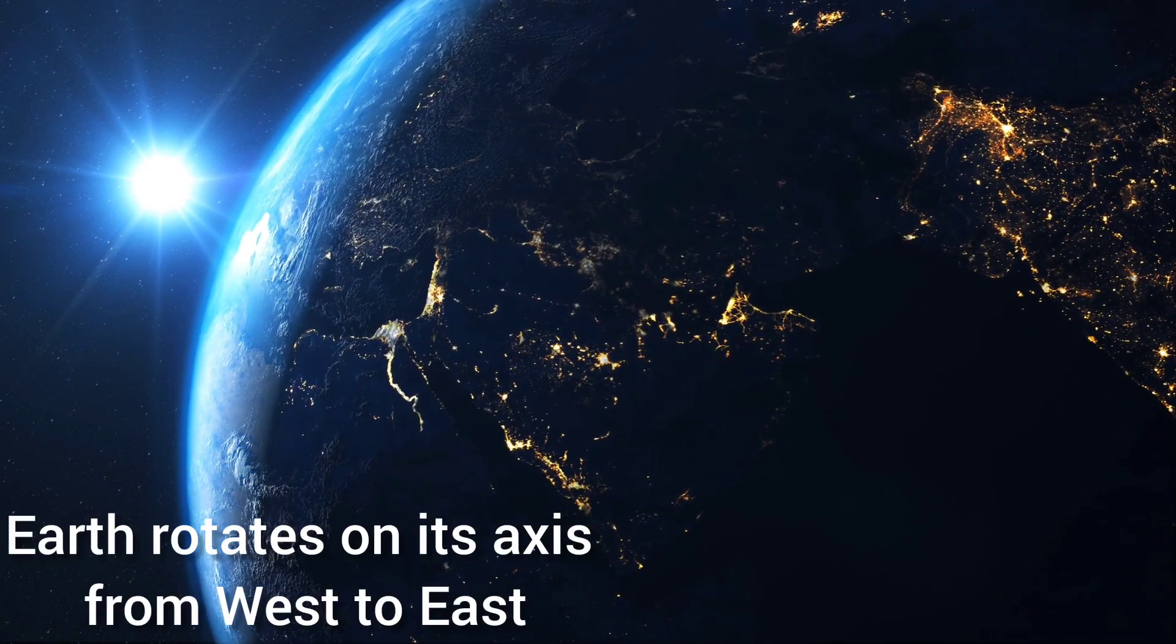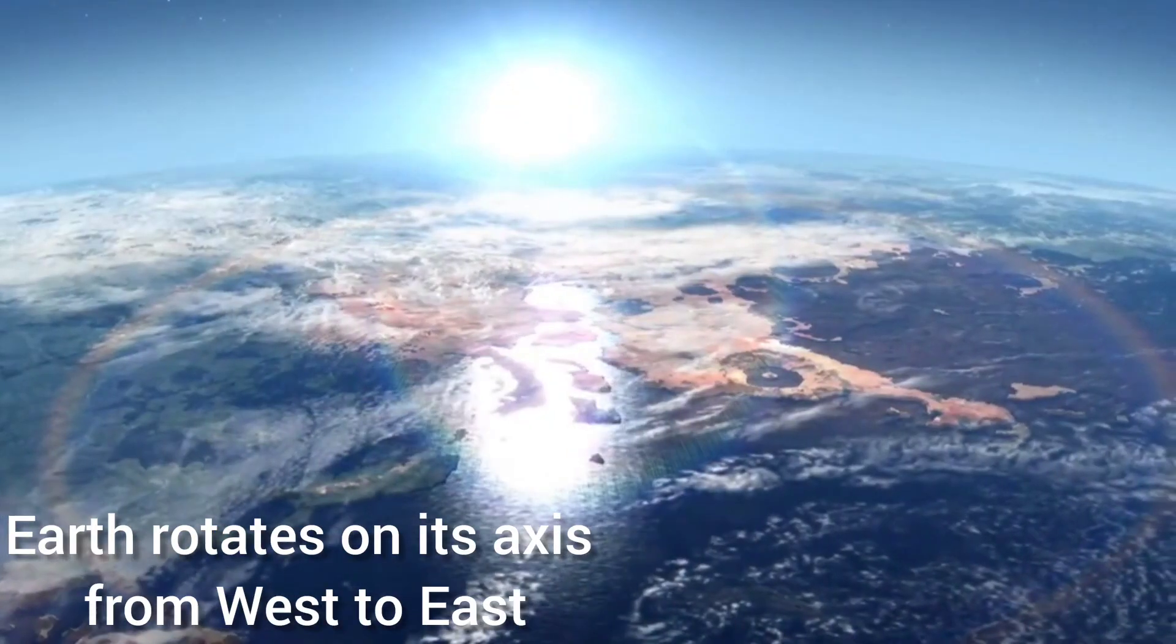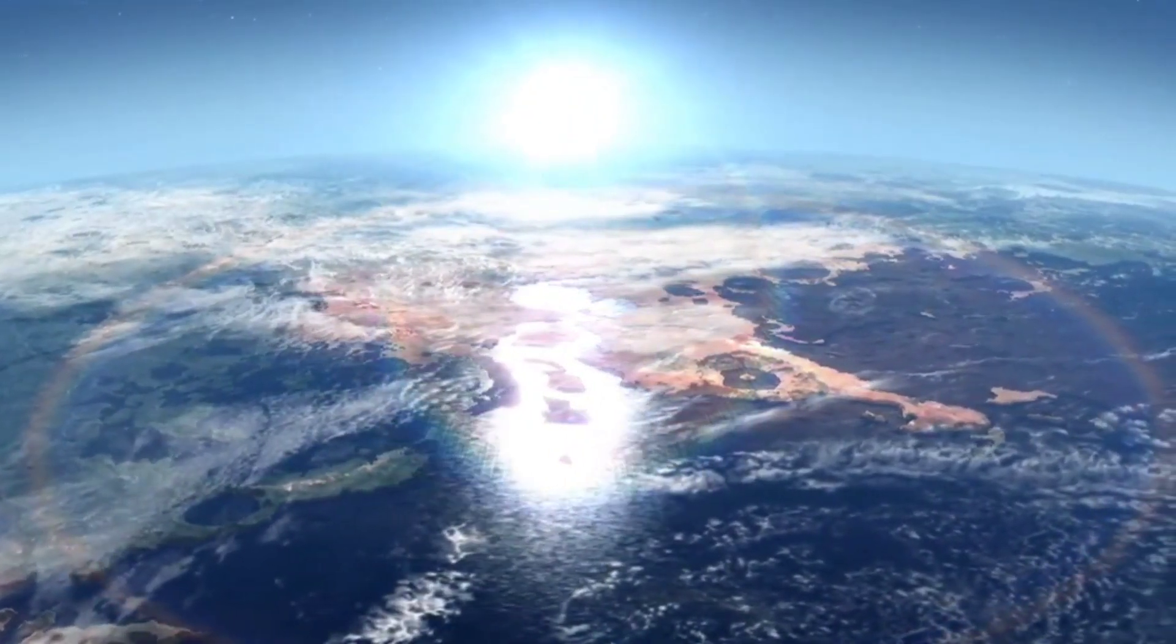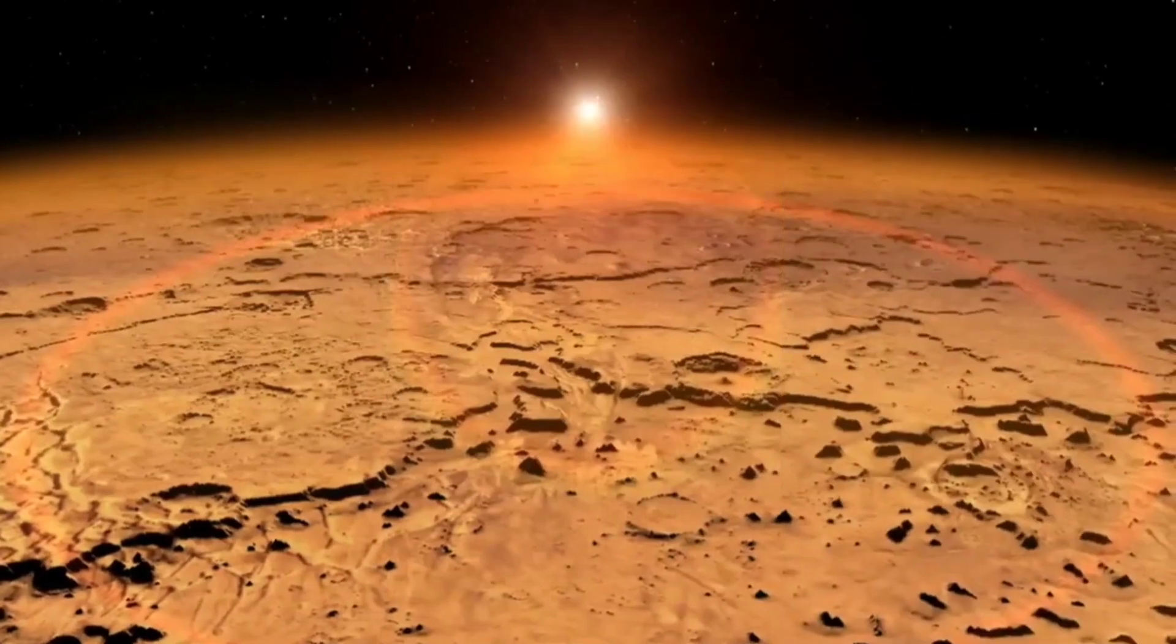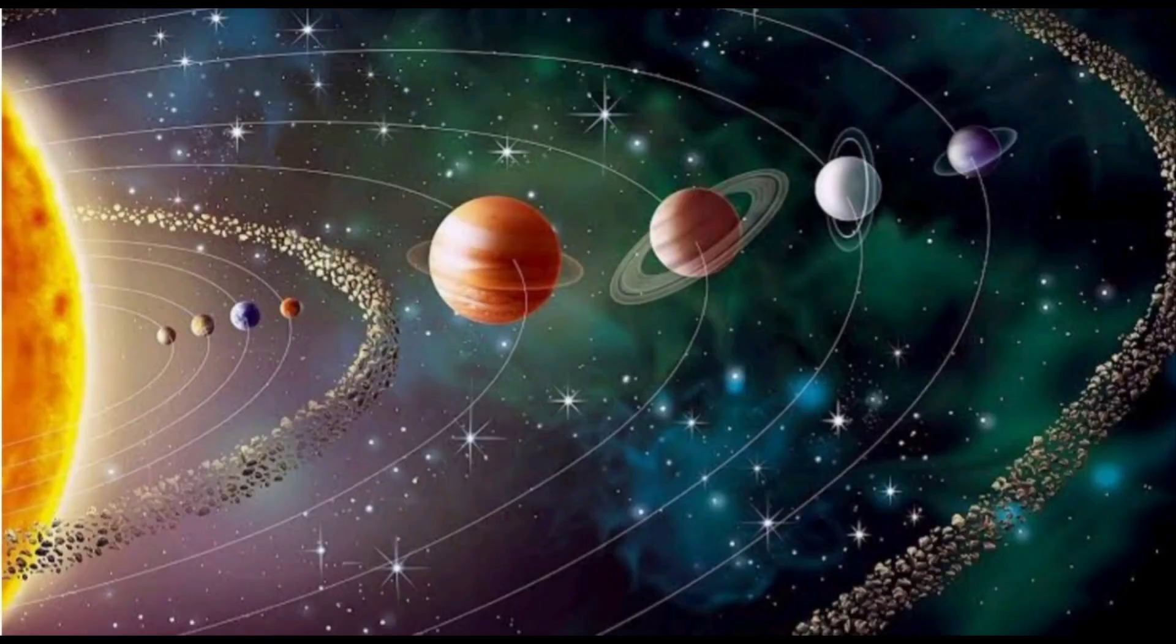The Earth rotates from west to east. The Earth takes 365 days to orbit the sun.